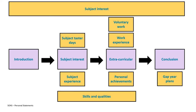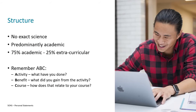One way to conclude is by talking about any gap year and future plans — how you want to use your degree and what you plan to do next, perhaps further study or a particular career. However, you don't have to go with that order; you could even open with your future plans in the introduction. There's no exact science to the structure of your personal statement, so long as you keep it predominantly academic. For a rough split, I'd go with roughly 75% academic to 25% extracurricular.